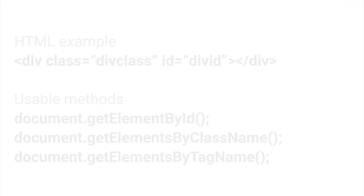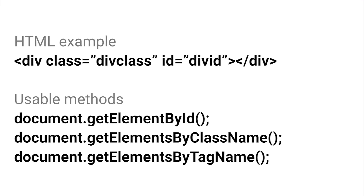For many years now, we've had certain methods built into JavaScript that allow us to grab a certain element or node inside the DOM by referring to a class, an ID, or a tag name associated with that element. As you can see on the screen, I have the different methods listed. The first method allows us to grab an element or node based on an ID it may have attached to it.